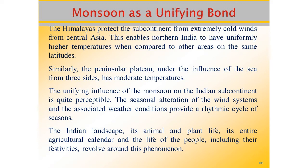The unifying influence of the monsoon on the Indian subcontinent is quite perceptible. The seasonal alternation of the wind system and the associated weather conditions provide a rhythmic cycle of seasons. Even the uncertainties of the rain and the uneven distribution of rainfall are very typical of the monsoon. The Indian landscape, its animal and plant life, its entire agricultural calendar and life of people including their festivities — all of this revolves around this phenomenon.